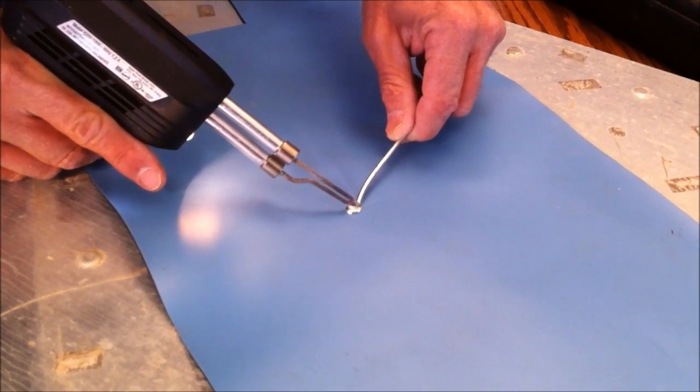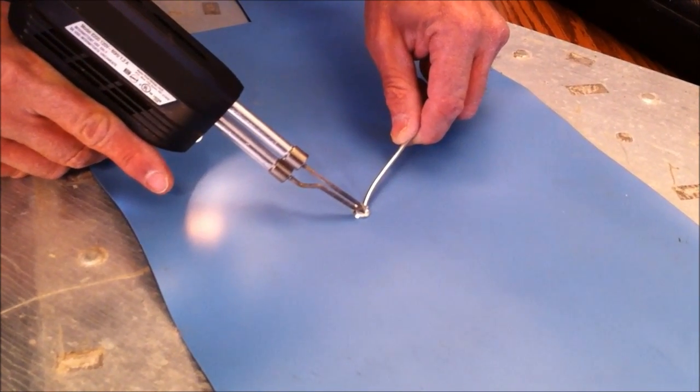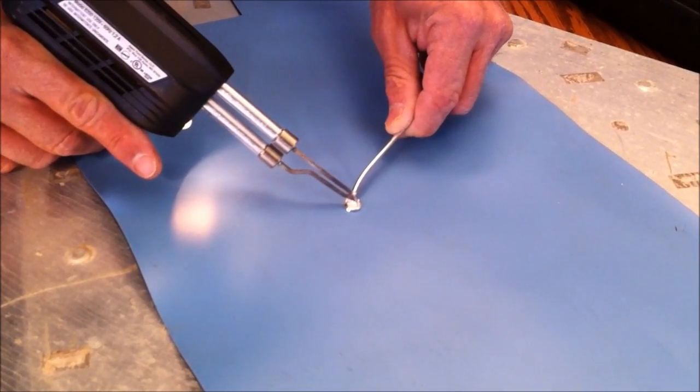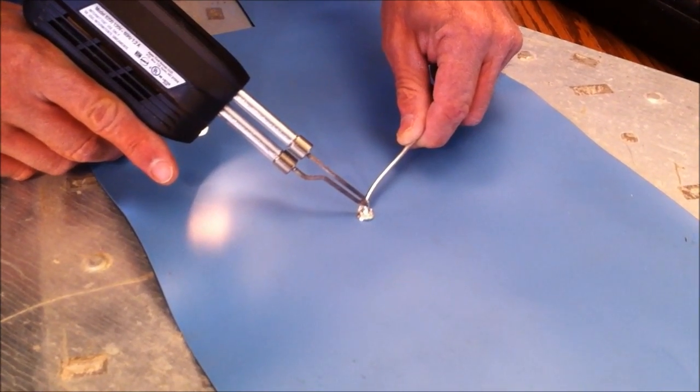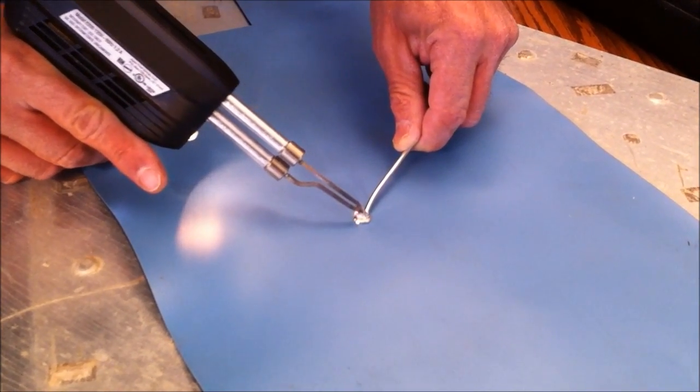As you can see today, now with this particular soldering iron, it's a brand new Weller and it has a temperature range of up to 900 degrees. I have it permanently mounted in the on position, so it's dumping out quite a bit of heat.